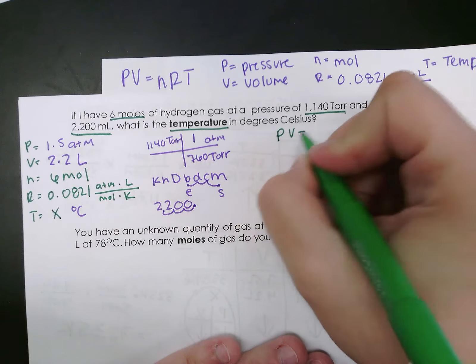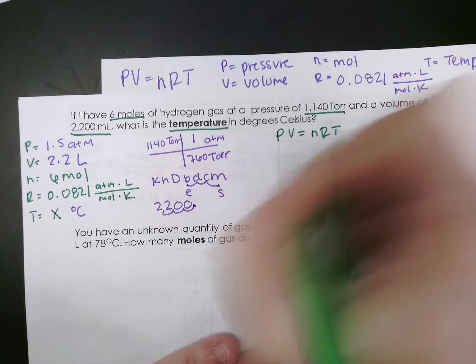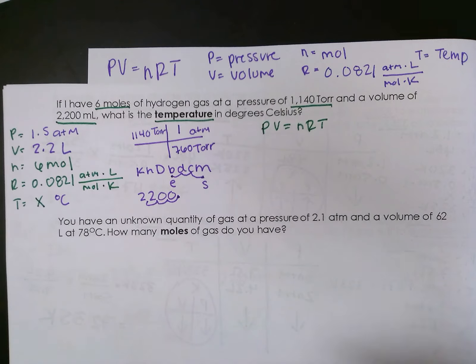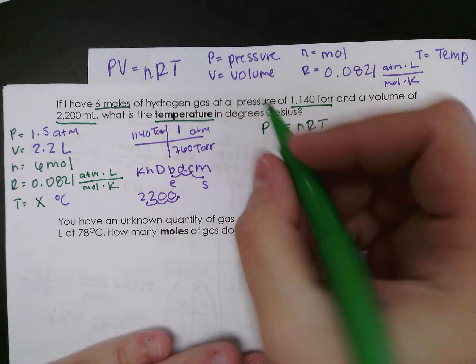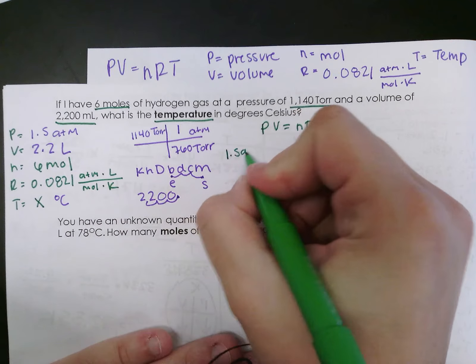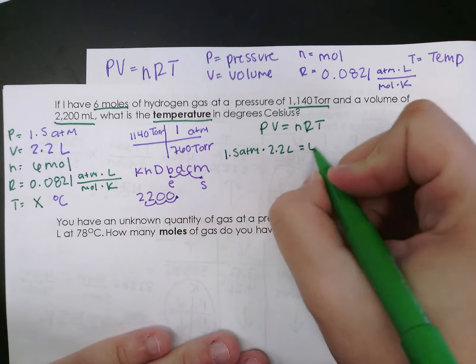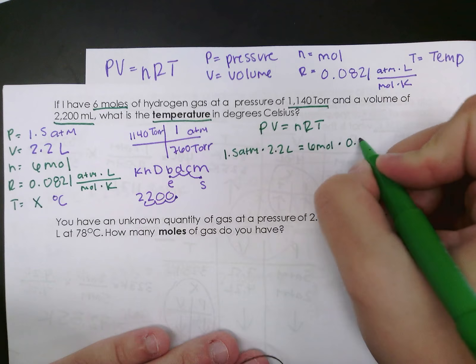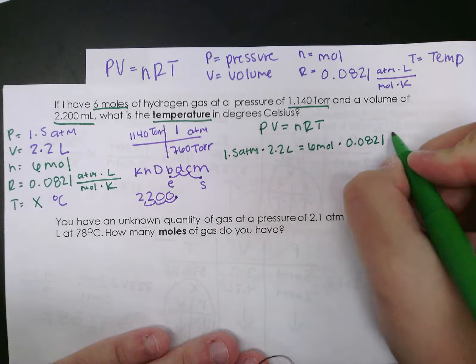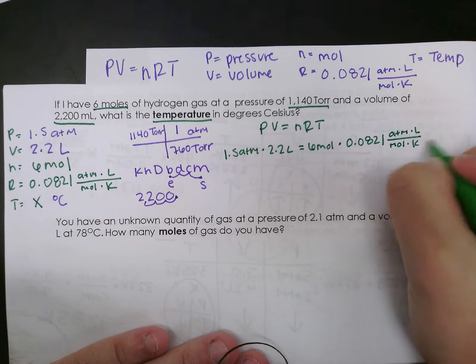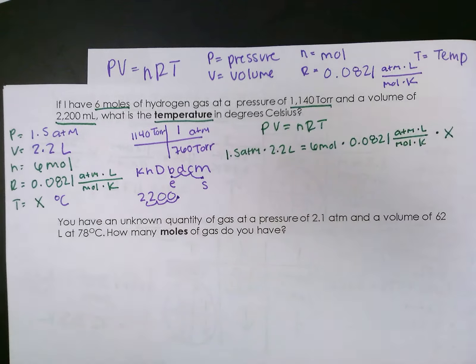Now I'm just going to plug it into my problem. For this setup, I'm going to go ahead and put in all the units, but the next few, I'm just going to put in the numbers. So my pressure is 1.5 atmospheres times 2.2 liters, which is equal to 6 moles times our gas law constant times X because we do not know our temperature.